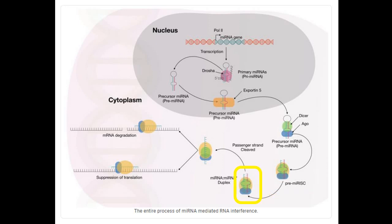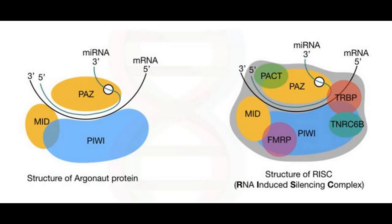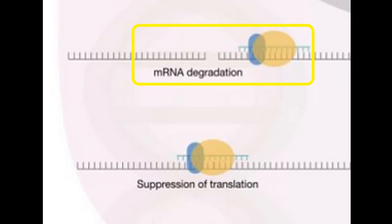The small double-stranded RNA is loaded into the RNA-induced silencing complex (RISC). The passenger strand is then degraded, and the guide strand along with the RISC is loaded onto the target messenger RNA. The RISC is a complex of many proteins; the Argonaute protein (AGO2) is one of them. AGO2 finds complementary bases of the guide strand on the 3' end of the messenger RNA and cleaves it.